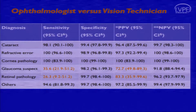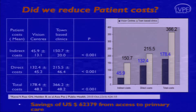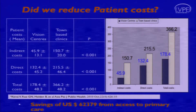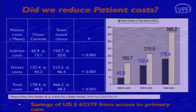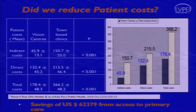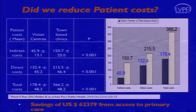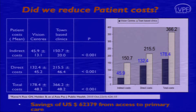A cost effectiveness analysis was done across three vision centers over one year. We found the three vision centers combined could save approximately 62,000 US dollars, which is about 20,000 per vision center. So if you have a vision center, in one year you can recoup the cost of the entire vision center when you account for all direct and indirect costs incurred.